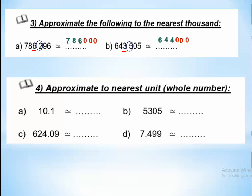Approximate to the nearest whole number. We know the whole number is the units place. Underline the units, circle the next-door digit — if less than 4, do not change the number. Write the result with a decimal point and zero. For a number like 305.5, if there is no decimal shown, add a decimal point and zero after applying the rule.